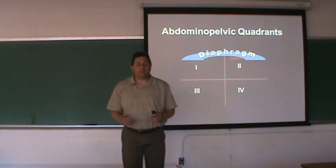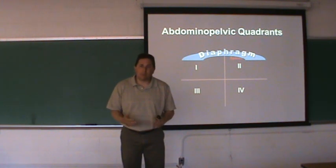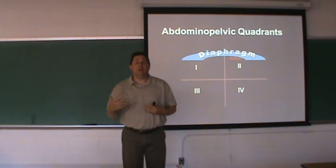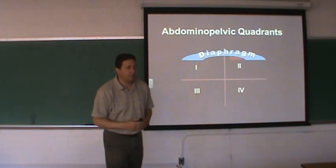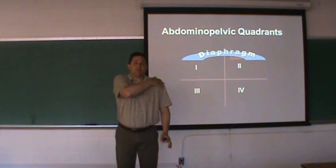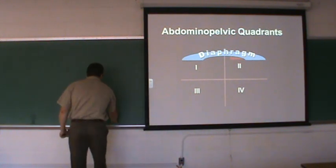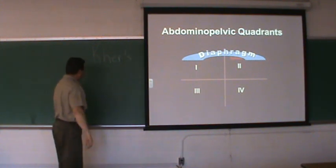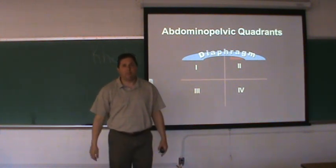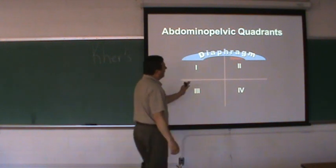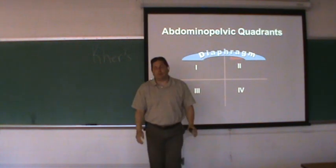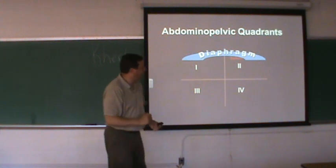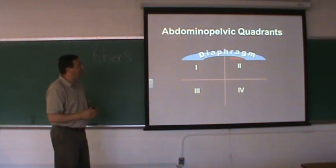With the spleen and many other organs, we get what we call referred pain — pain somewhere other than the injured site. The most common example people think of is a heart attack: you get pressure to the heart but referred pain to the left shoulder, jaw, or back. With the spleen, we get referred pain to the left shoulder. That referred pain to the left shoulder is called Kehr's sign. It usually shows up about 20 to 30 minutes after the injury, sometimes quicker.